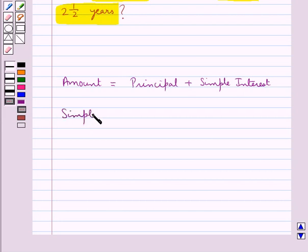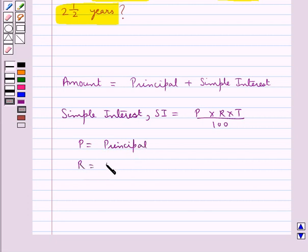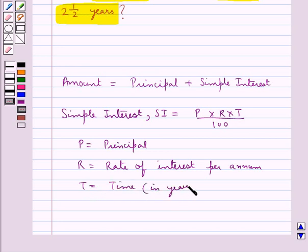Where P is the principal, R is the rate of interest per annum, and T is the time in years.